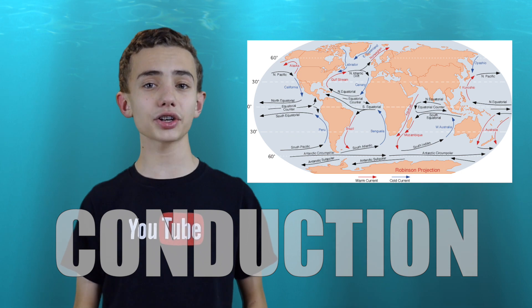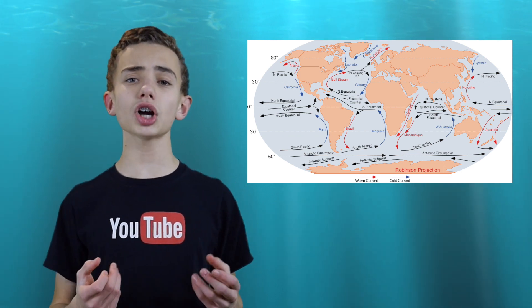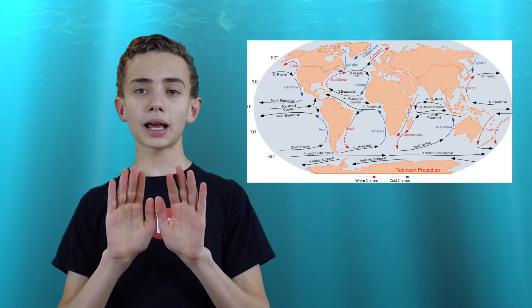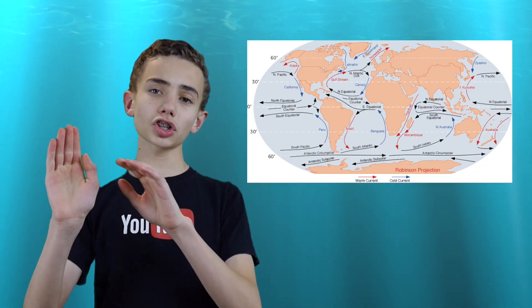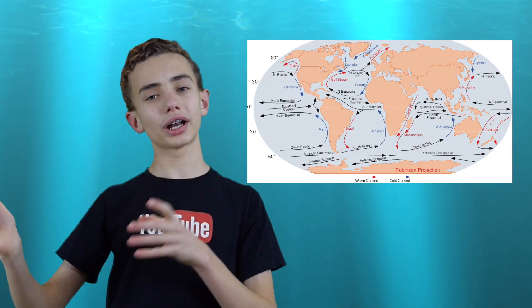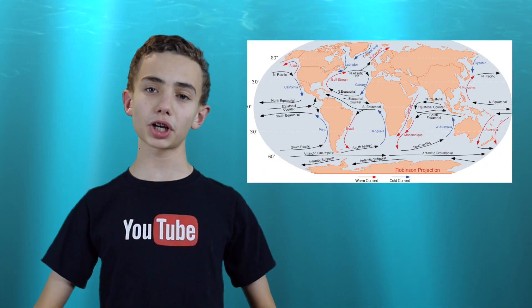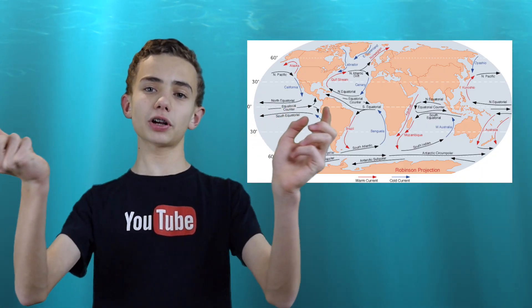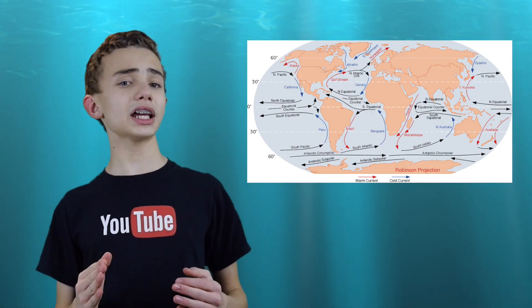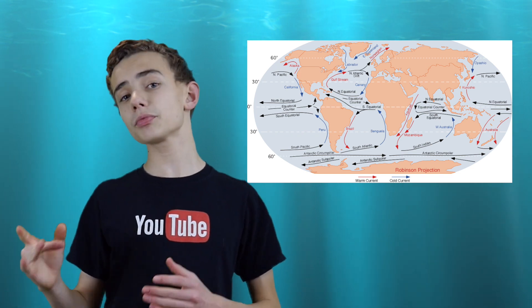The ocean is a great example of all three forms of heat transfer. For convection: the sun heats the ocean mostly at the equator, where it receives the most direct sunlight. Because of the Earth's shape and rotation, the warmer water rises up, moves away from the equator, gets cooler, then comes back to the equator to be heated again — forming a continuous cycle, another instance of a convection current. The oceans also demonstrate radiation, since the ocean is heated by radiational heat from the sun — indirect contact.